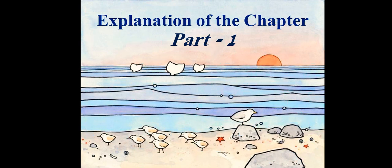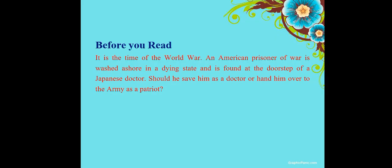Children, these explanations are divided into parts. Let's start the explanation of part one. Before you read: it is the time of World War. An American prisoner of war is washed ashore in a dying state and is found at the doorstep of a Japanese doctor. Should he save him as a doctor or hand him over to the army as a patriot? Let's see in this wonderful story of 'The Enemy.'